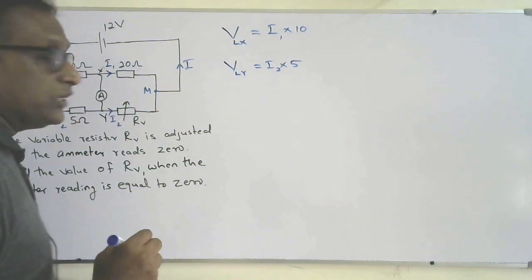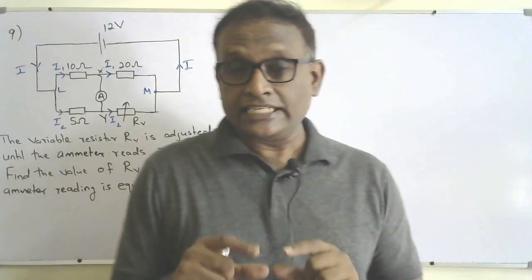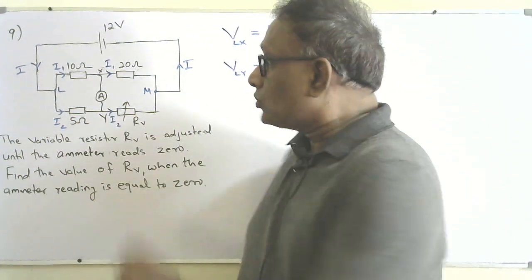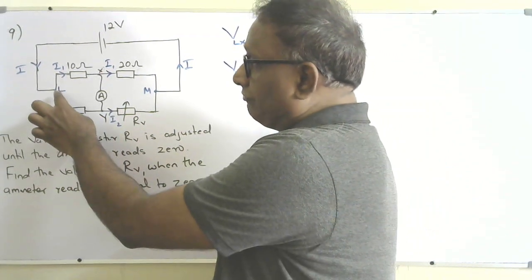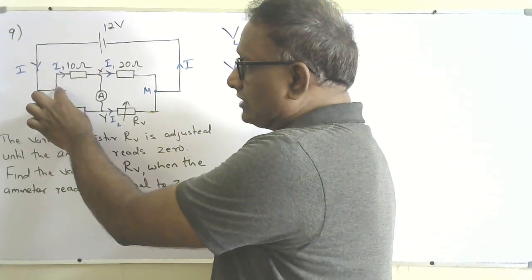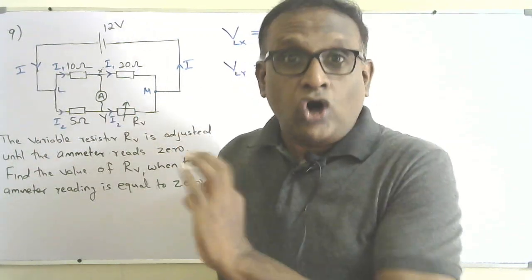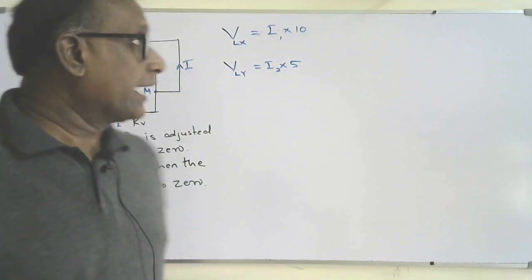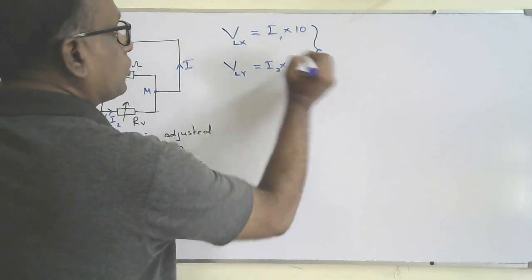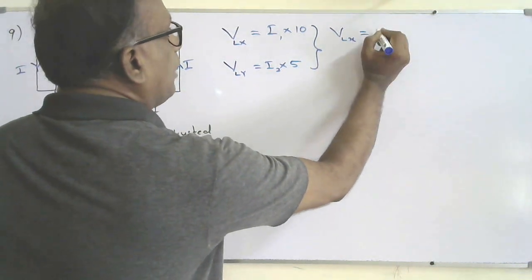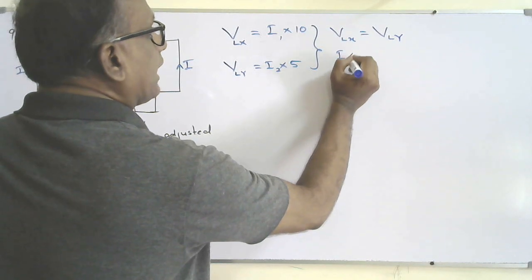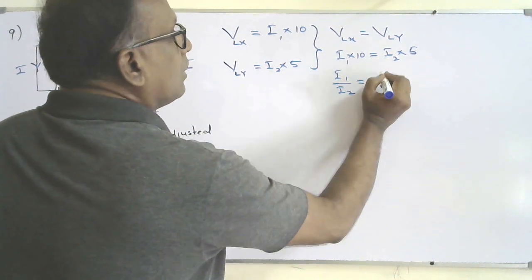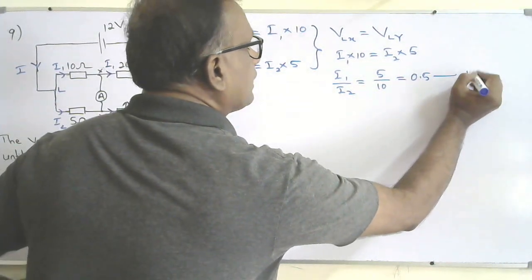Combining these two equations: since the potential difference between X and Y is zero, potential at X equals potential at Y. Therefore V_LX must equal V_LY, because L is the common point for both. So we can equate: i1 times 10 equals i2 times 5, giving i1 over i2 equals 5 over 10, which equals 0.5. That's the first equation.